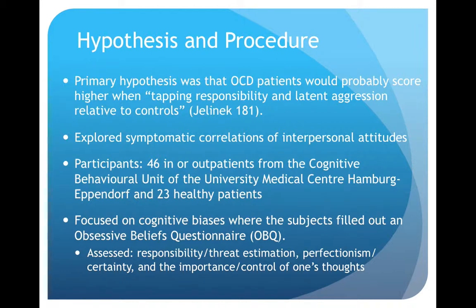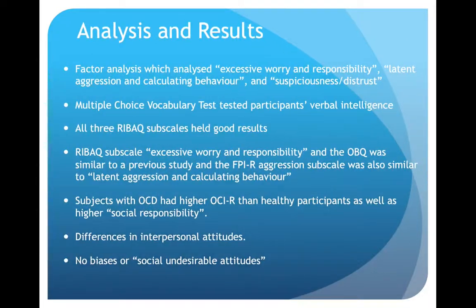There were 46 in- and outpatients from the University Medical Center in Hamburg, Eppendorf, and 23 healthy participants. They focused on cognitive biases, where subjects filled out OBQs which assessed responsibility, threat estimation, perfectionism, certainty, and the importance or control of one's thoughts. The researchers used factor analysis and analyzed excessive worry and responsibility, latent aggression and calculating behavior, and suspicions and distress. There was also a Multiple-Choice Vocabulary Test which tested each participant's verbal intelligence.